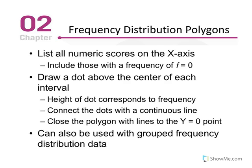Frequency distribution polygons. Polygons are line graphs, so the histograms were bar graphs, and a polygon is a line graph. So we list all numeric scores on the x-axis, include those with a frequency of zero, as in the case that we discussed for the histogram. Draw a dot above the center of each interval. The height of the dot corresponds to frequency. We connect the dots with a continuous line, and we always bring that line down to the abscissa. So close the polygon with lines to y equals zero.